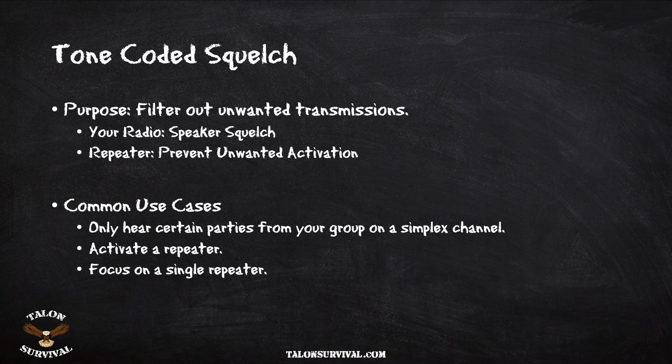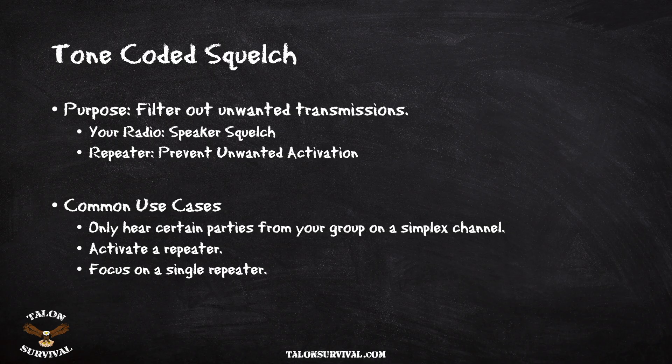Both CTCSS tones and DCS tones are two different types of tone-coded squelch. The primary purpose for using tone-coded squelch is to be able to filter out unwanted transmissions. This could be utilizing your radio where you only want to hear traffic from a specific group of people, say parties within your group or your team, or it could be for activating a repeater.